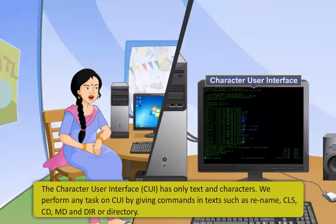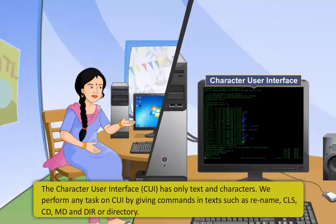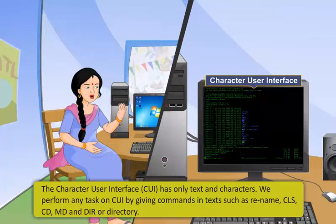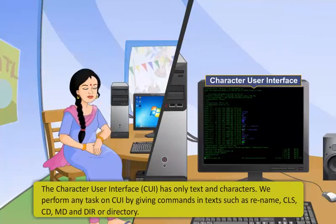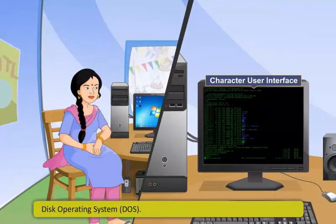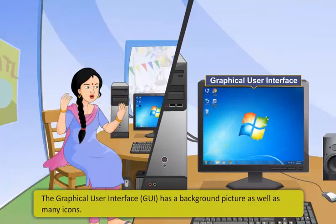Character user interface does not have any icons or images. It works using only text and characters. We can perform tasks on CUI by giving commands in text, such as rename, CLS, CD, MD, and DIR or directory. An example of CUI is the disk operating system.